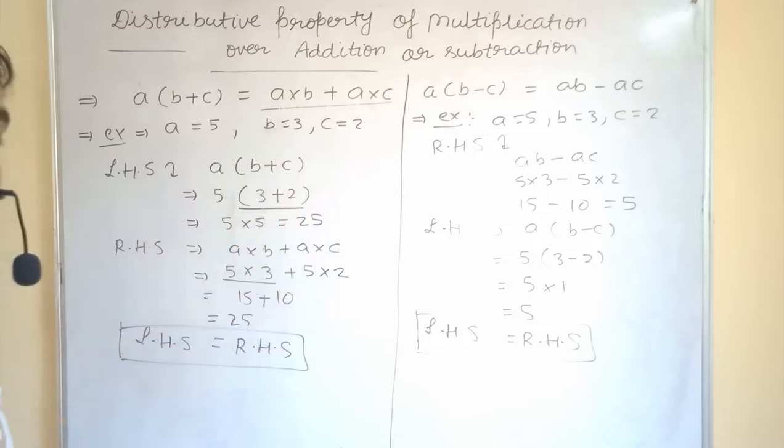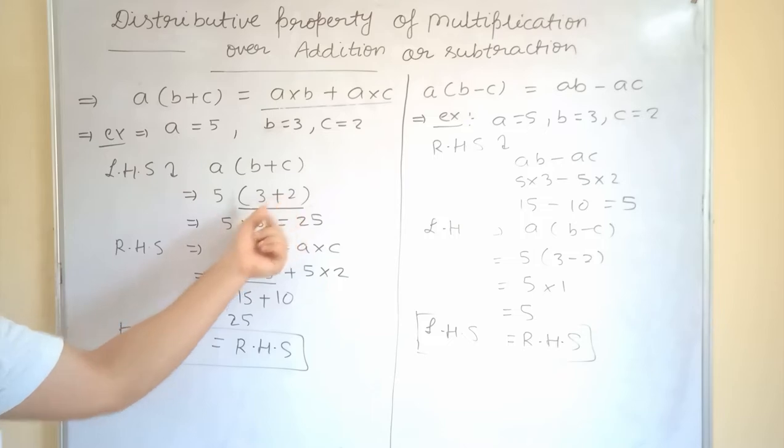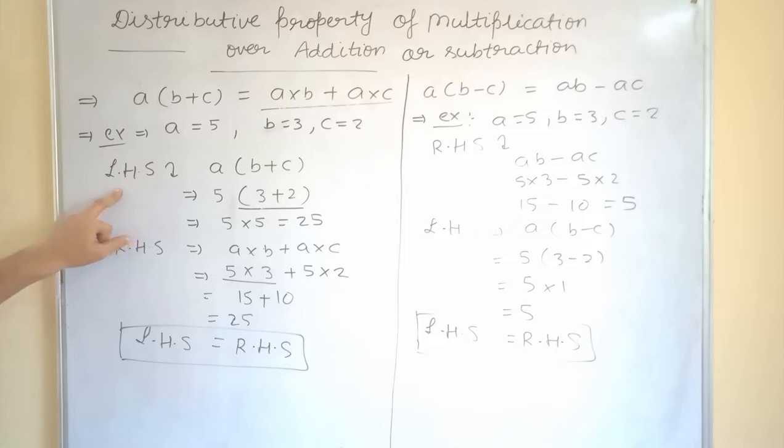C, 2. And according to BODMAS rule, first we have to solve the bracket. So, bracket is 3 plus 2, 5 will come and 5, 5 is 25. So, we have solved LHS. One work is finished.